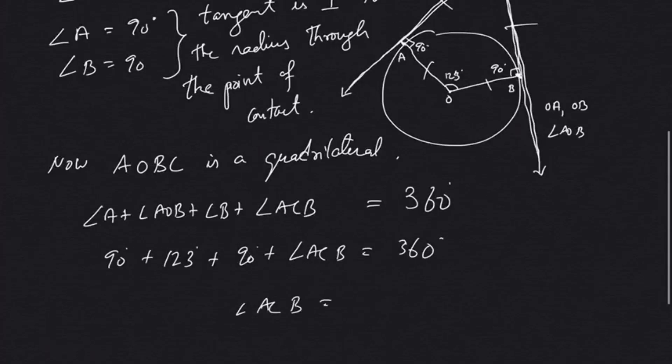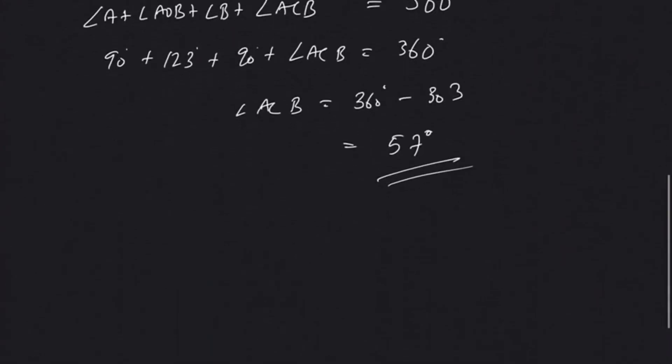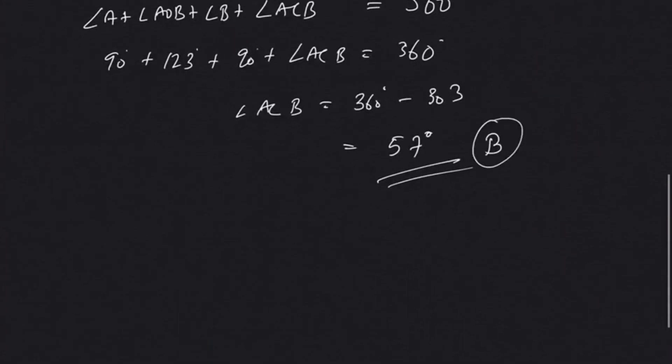This is 90, this is 123, this is again 90, angle ACB is 360 degrees. So angle ACB, that is the angle between the tangents, will be 360 minus (90 plus 90 is 180, plus 123 is 303). So 360 minus 303, our answer will be 57 degrees. Option B is our correct answer.